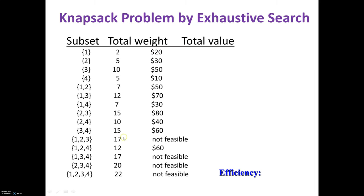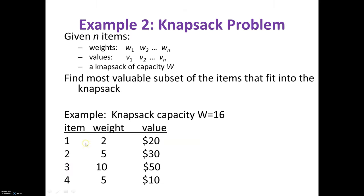For example, considering items 1, 2, and 3 together: weights are 2 + 5 + 10 = 17, which cannot be fitted into a knapsack with capacity 16, so this subset is infeasible. This is an example of an exponential problem because as n increases, complexity grows exponentially: with 4 items it is 2^4, with 5 items 2^5, with 10 items it is 1024. From all subsets you choose the optimal one.